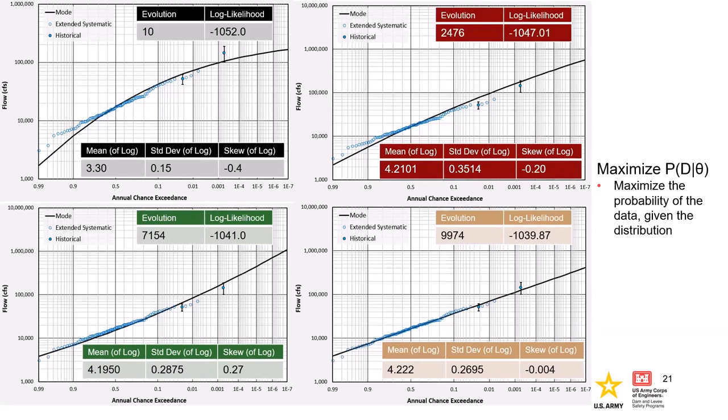The log likelihood values move slightly more towards zero as the algorithm progresses. When you're looking at the numbers — the log likelihoods — the better it fits the data and the more likely that data came from that curve, the closer to zero that value will be.